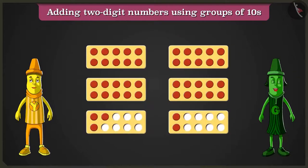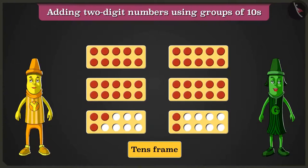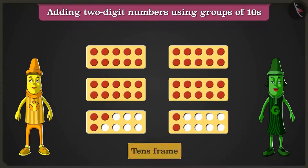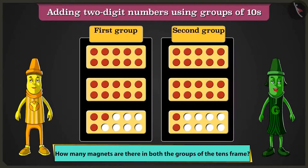Greeny, look, this is a tens frame. There are red magnets on the frame. Now, can you tell me how many total magnets are there in both groups of tens frames?